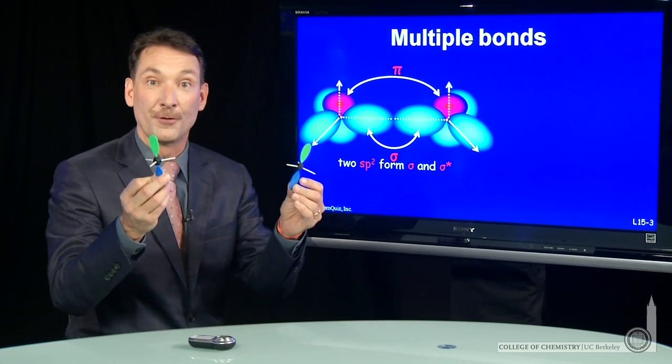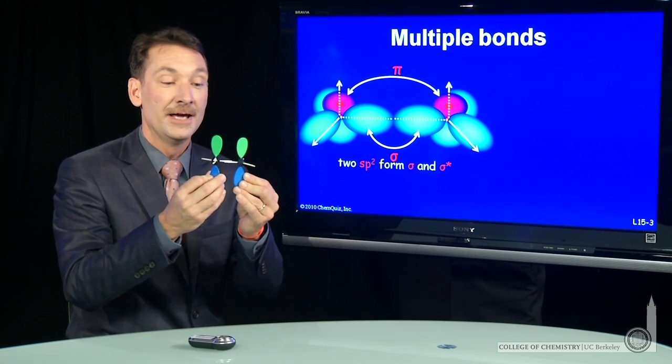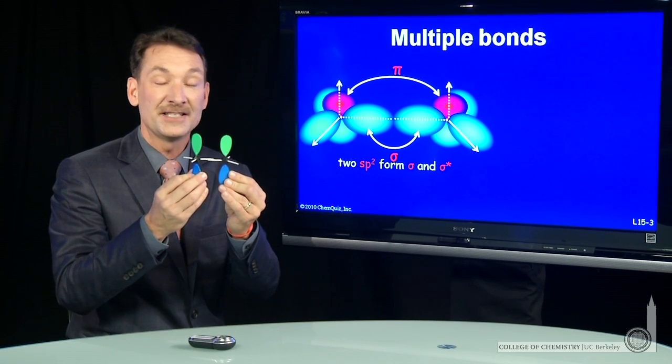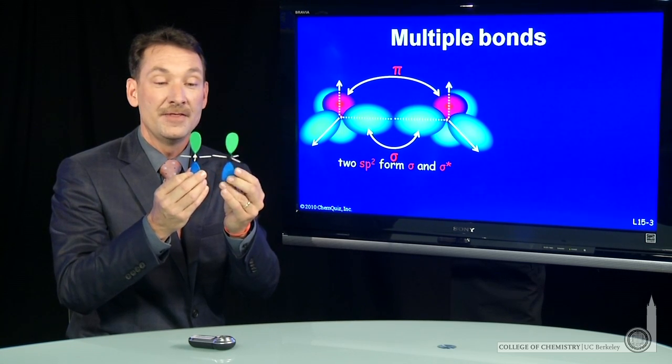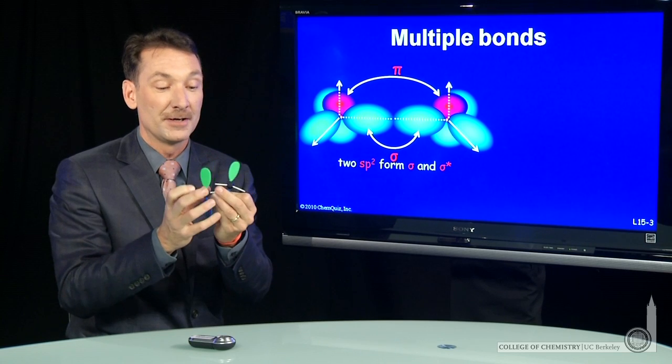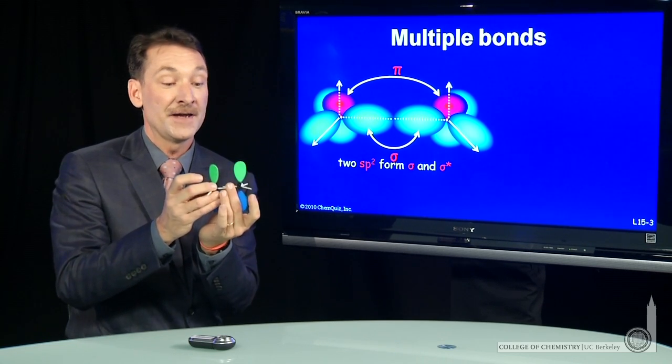So a pi bond can be formed here. I have an overlap of the sp2s, then the p orbitals. I'm going to make the bond with my fingers. There.